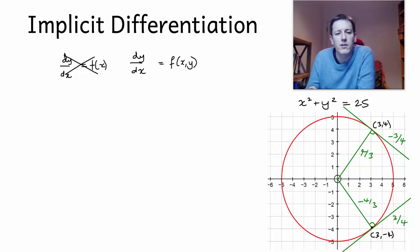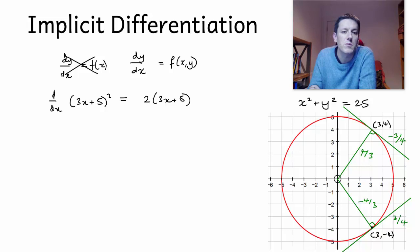So how do I think about the derivative of a curve defined implicitly? Well, we have to use the chain rule. So for example, let's say I was trying to find the derivative of a function like (3x + 5) squared. We apply the chain rule, so we get 2 times (3x + 5), and we multiply by the derivative of the inside function, which is 3, so we get 6 times (3x + 5).